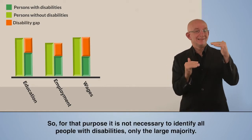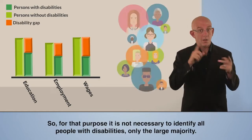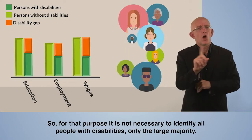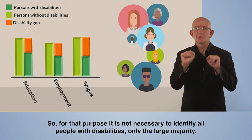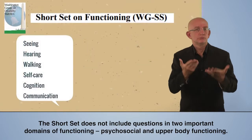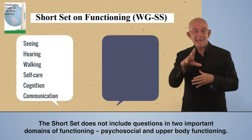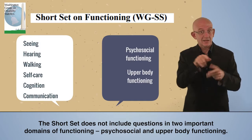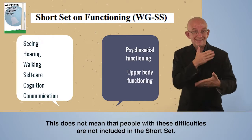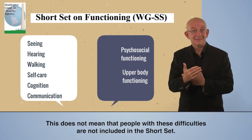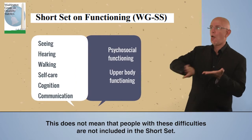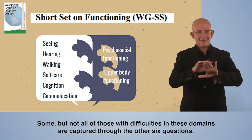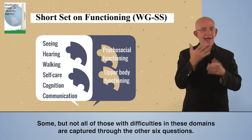For that purpose, it is not necessary to identify all people with disabilities, only the large majority. The short set does not include questions in two important domains of functioning: psychosocial and upper body functioning. This does not mean that people with these difficulties are not included in the short set — some, but not all, of those with difficulties in these domains are captured through the other six questions.